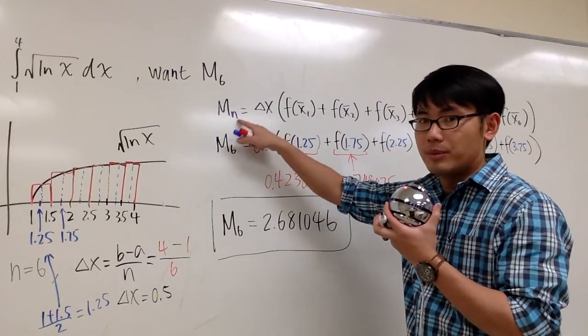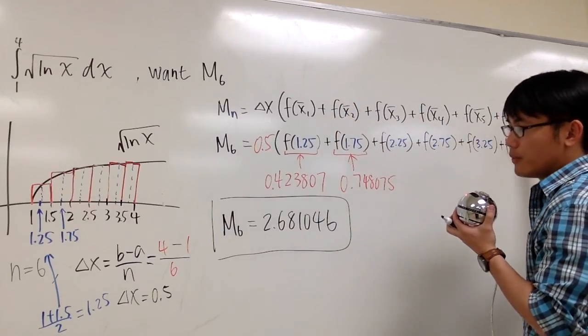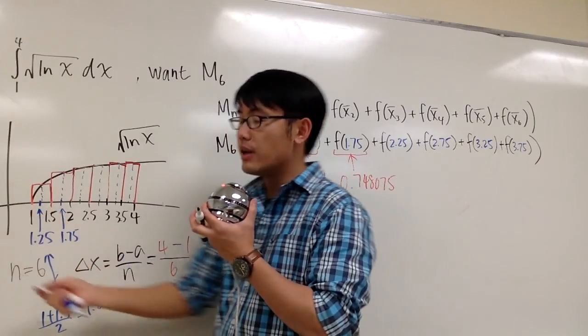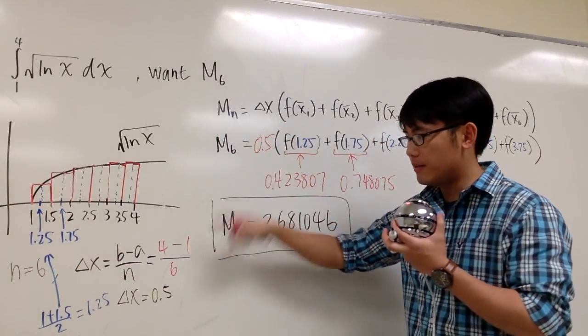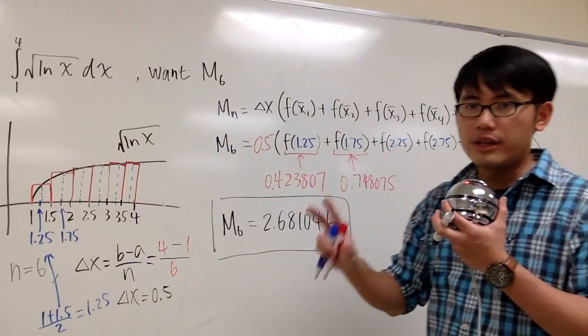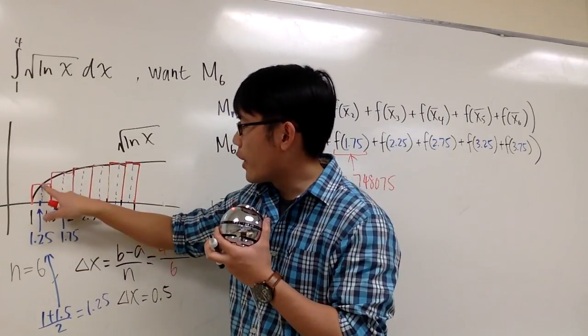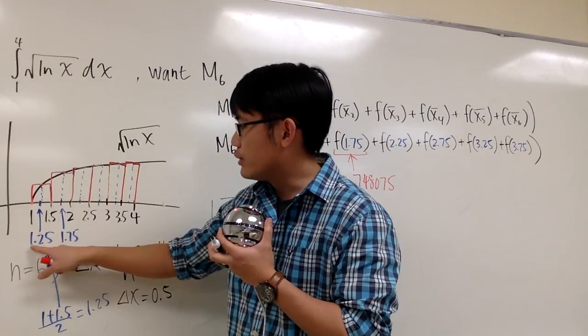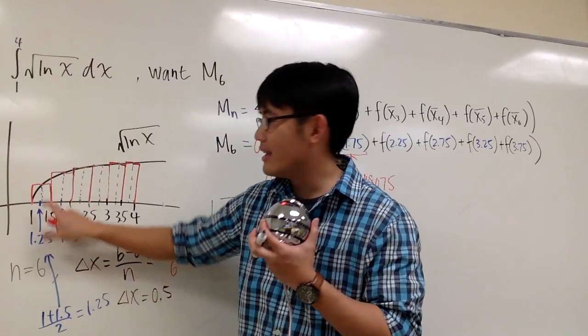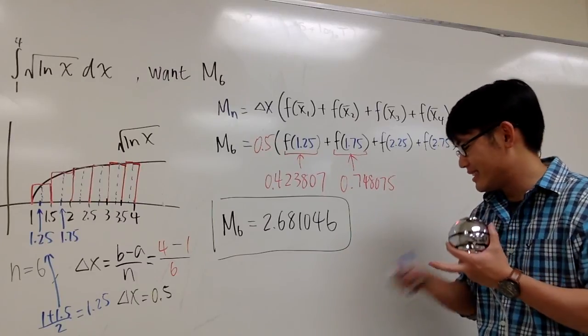Here's the formula for the midpoint. Mn is equal to delta x times a bunch of this. Well, what does this mean? Delta x is just how wide each rectangle is, which we found to be 0.5. And then each of these represents the height of the rectangle. Notice that for the height of the first rectangle, it's the y-value where the x-value is equal to 1.25, because you base it off when x equals 1.25. That's the height. So it's just computing the area of a bunch of rectangles. That's all.